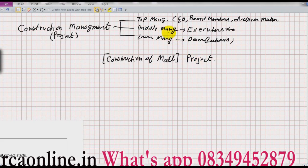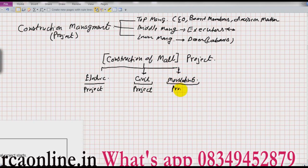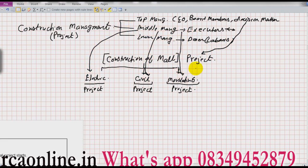If you see the construction of a mall as a project, then for top management this is the overall project. But for middle management, the construction of the mall is not the project — rather, construction of some part of the mall is their project. If somebody is from the electrical department, installation of electrical equipment is their project. If somebody is from civil, construction of the civil structure is their project. If somebody is from marketing, selling of the mall and its shops is their project.